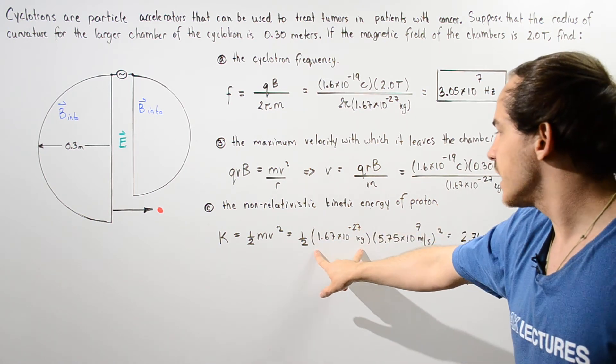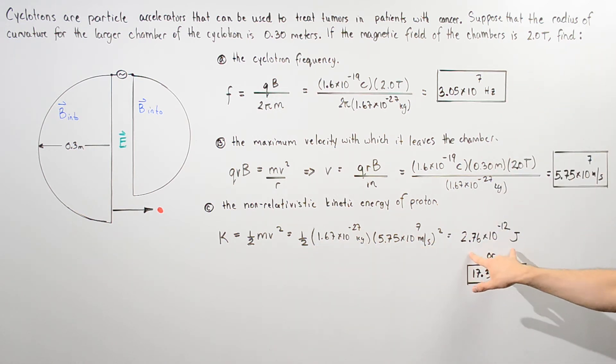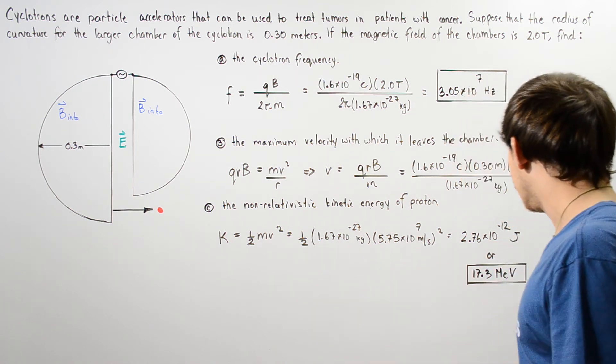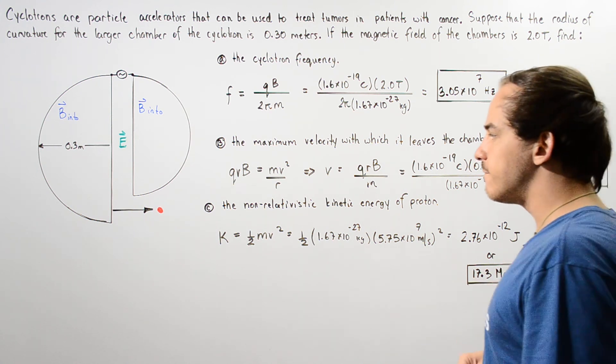And we get 2.76 × 10⁻¹² joules of energy, or equivalently about 17.3 mega electron volts.